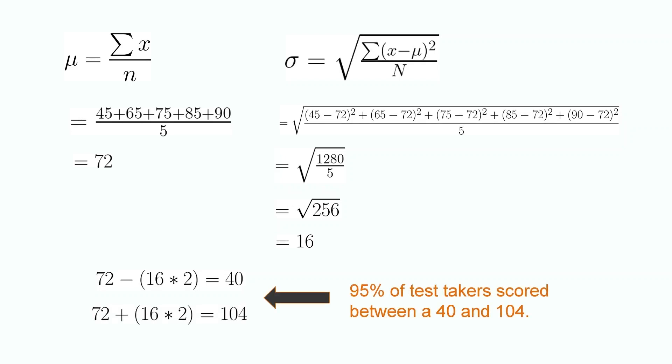Thus, we can conclude that 95% of the students scored between 40 and 104. I guess someone got a lot of bonus points.